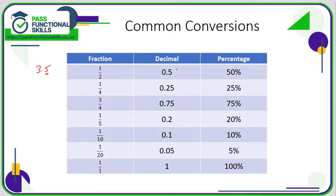You need to learn that a quarter is 25% or 0.25 as a decimal. If you know one quarter, then three quarters should be easy because it's just three times that amount — three times 25 is 75, and three times 0.25 gives you 0.75.